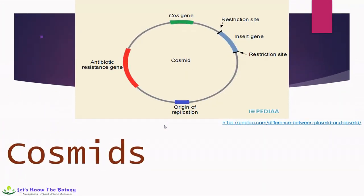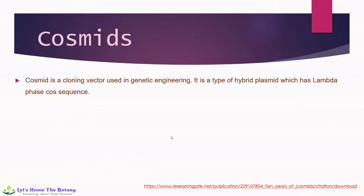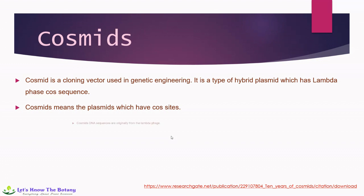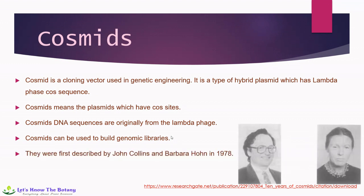Another type we are going to discuss is cosmids. A cosmid is a cloning vector used in genetic engineering — a type of hybrid plasmid which has lambda phage cos sequences. Cosmids are plasmids that have cos sites, and their DNA sequences are originally from the lambda phage. Cosmids can be used to build genomic libraries. They were first discovered by John Collins and Barbara Hohn in 1978.